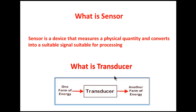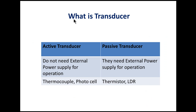What is meant by transducer? A transducer is a device which converts one form of energy to another form of energy. There are two kinds of transducer: active transducer and passive transducer. Active transducers do not need an external power supply for operation, while passive transducers do need an external power supply. Examples of active transducers include thermocouple and photocell — when a thermocouple is subjected to an unknown temperature it generates millivolts without requiring external power. Thermistor and LDR are passive transducers as they require external power supply to operate.